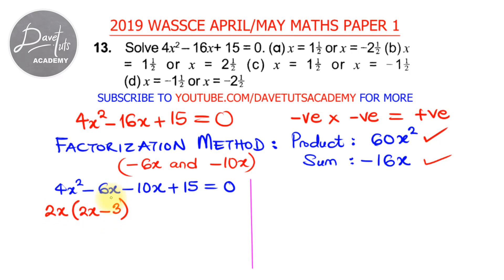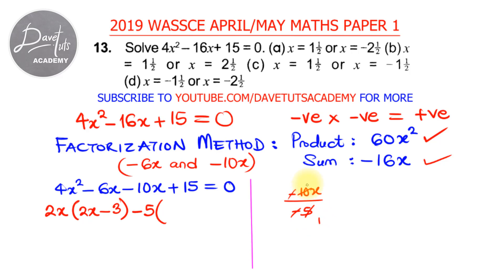For minus 10x and plus 15, 5 can go into both 10 and 15. This is where students make mistakes — you need to watch your signs. If I factor out minus 5, then minus 10x divided by minus 5 gives positive 2x, because the negatives cancel. 5 goes into 10 twice, retaining the x.